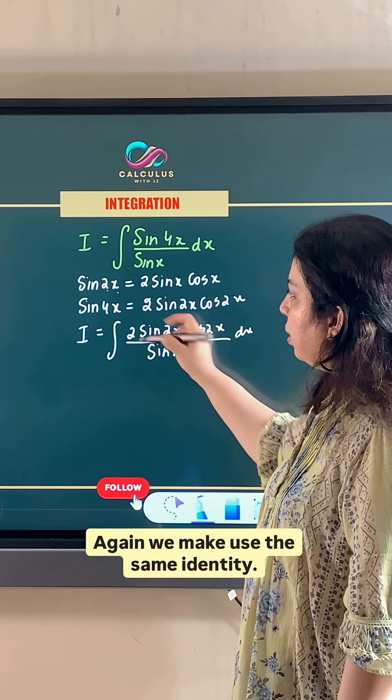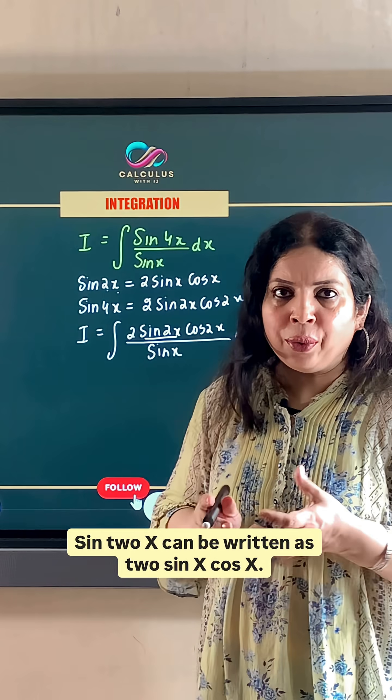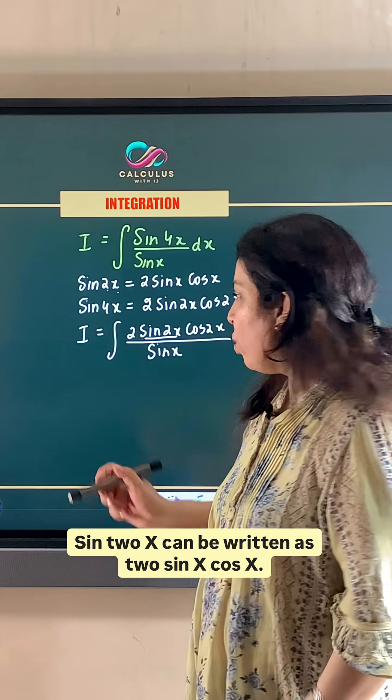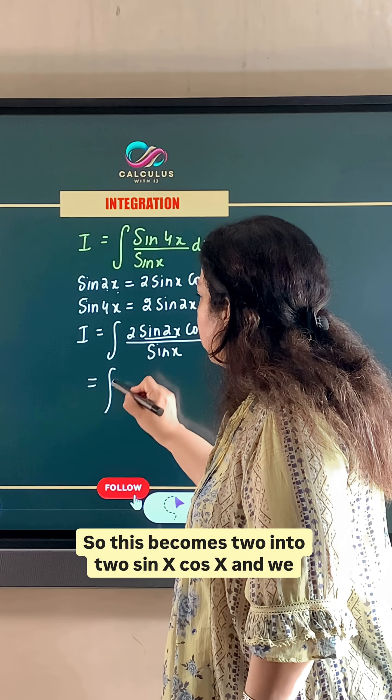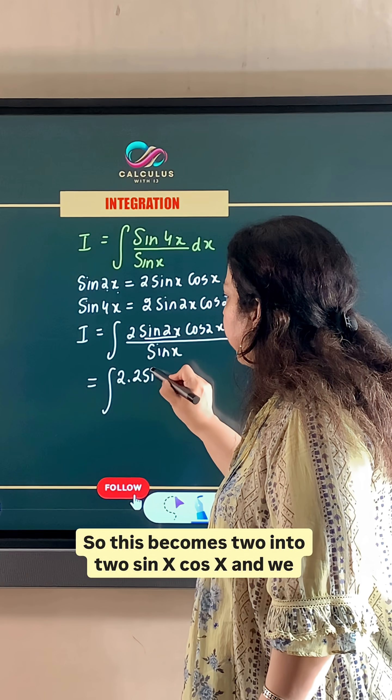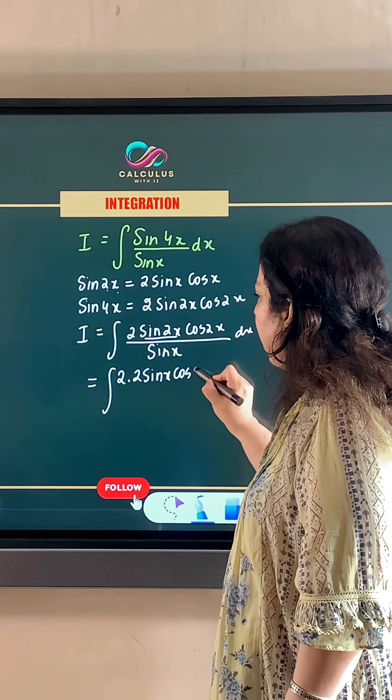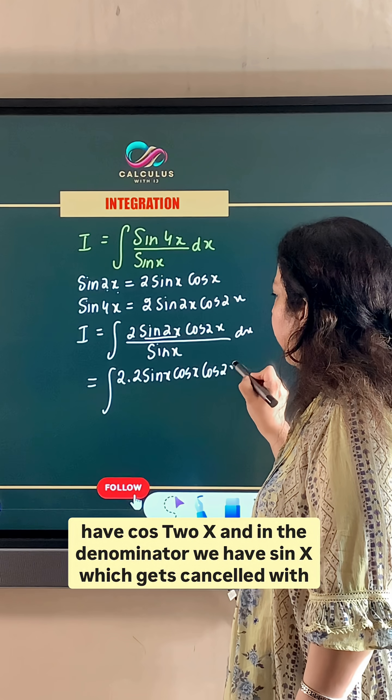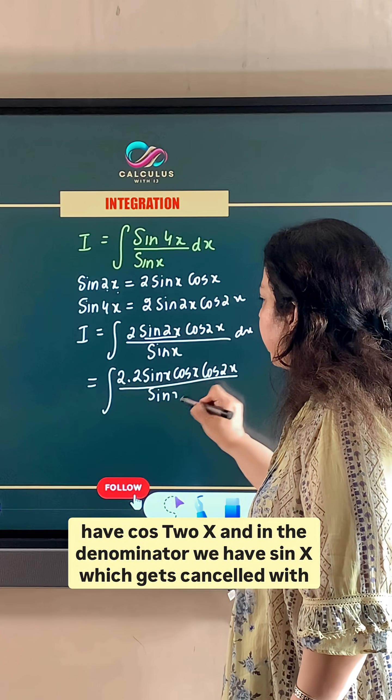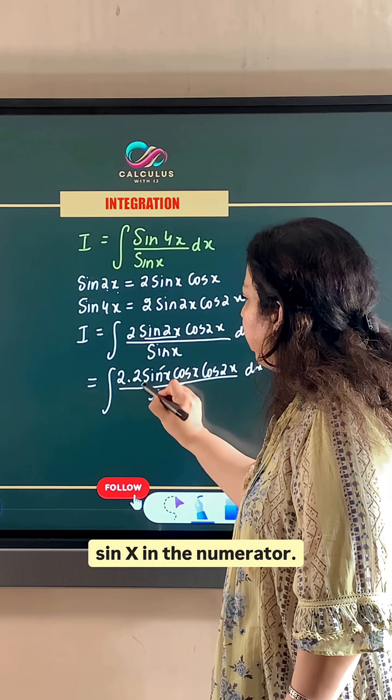Again, we make use the same identity. Sin 2x can be written as 2 sin x cos x. So this becomes 2 into 2 sin x cos x. And we have cos 2x. And in the denominator, we have sin x, which gets cancelled with sin x in the numerator.